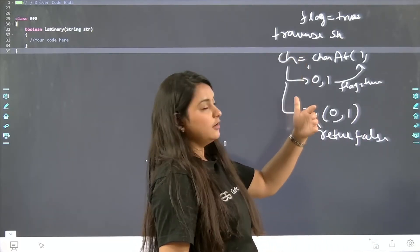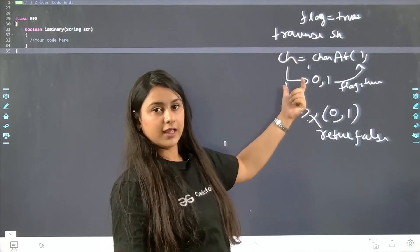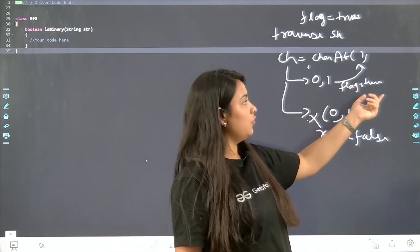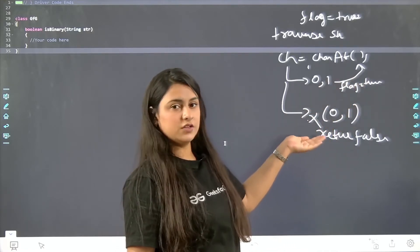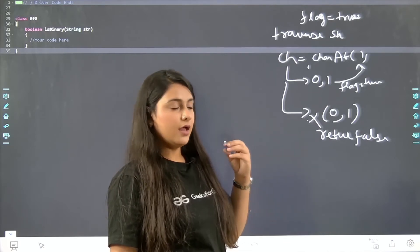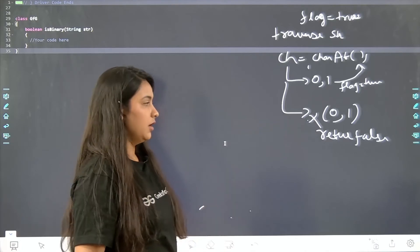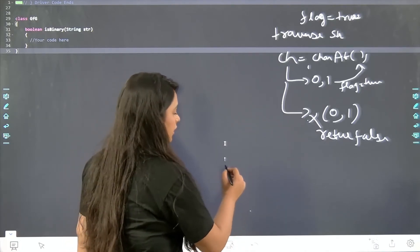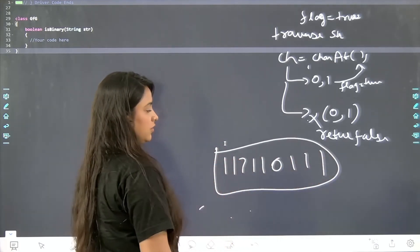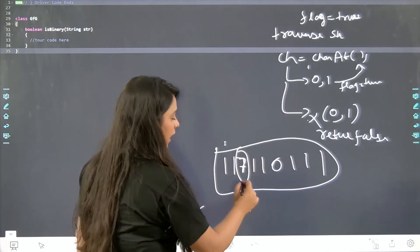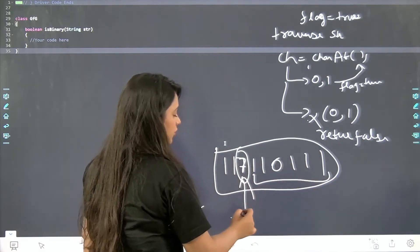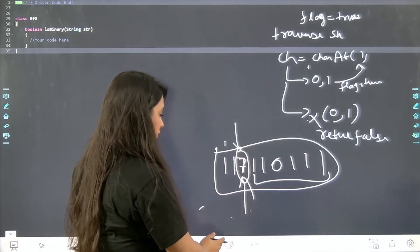To reiterate: we traverse the string, get one character at a time, and check if it is 0 or 1. If it is, the flag stays true. If it is not 0 or 1, we return false from that point only — we do not iterate any further. For example, if the input is '1 0 7 1 1 0 1 1 1', when we reach the character 7, since it is not binary we return false immediately without checking the remaining characters.